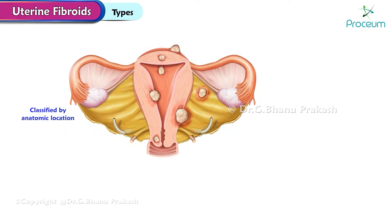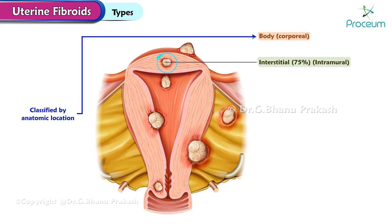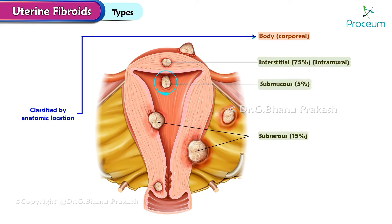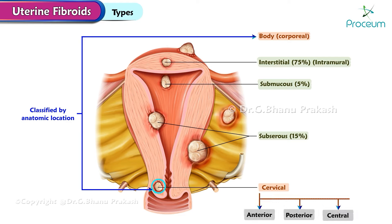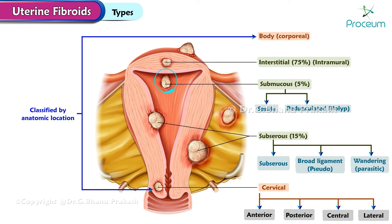Uterine fibroids are classified by anatomic location into body or corporeal, which further encompasses interstitial, making up 75% and predominantly intramural; subserous, constituting 15%; submucosal, representing 5%; and cervical, which includes anterior, posterior, central, and lateral locations. Within the subserous category, we find subserous, broad ligament, or pseudo, and wandering or parasitic fibroids, while submucous fibroids are further classified as sessile and pedunculated, or polyp.